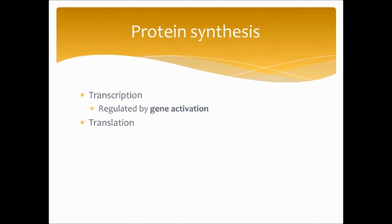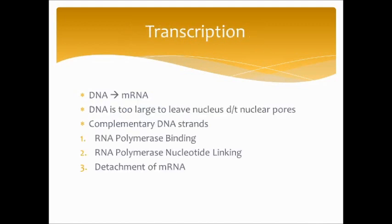To make proteins, we need to undergo transcription and translation in that order. Transcription is taking DNA and transforming it into mRNA; translation is taking that mRNA and using tRNA to transform it into amino acids to make a protein. Transcription is regulated by gene activation — turning genes on and off. Because DNA is too large to leave the nucleus through those nuclear pores, mRNA comes in and transcribes the DNA into mRNA. Complementary DNA strands line up with an mRNA strand with complementary base pairings.